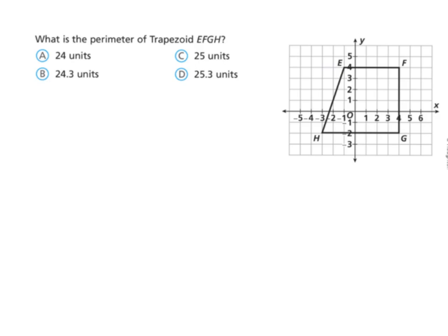We have one more question and this one involves a shape. Think about what type of shape this is — it's actually a trapezoid. To find the perimeter I need to go all the way around the outside. The left vertical side: one, two, three, four, five, six — six units. The bottom: one through seven — seven units. The top: one through five — five units. Now what about the diagonal side?